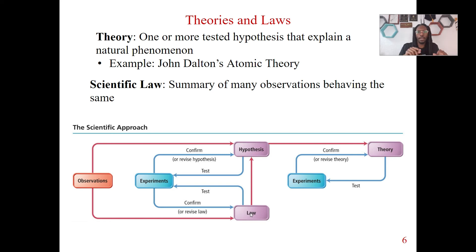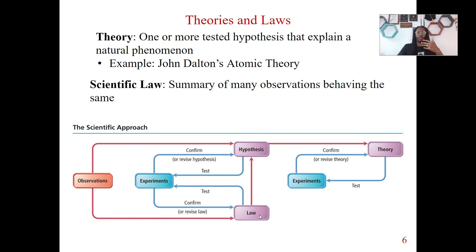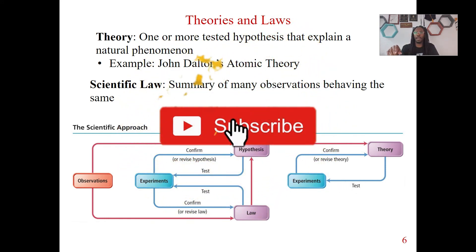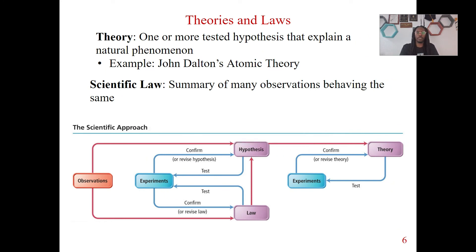Can a law turn into a theory? Yes, it can. Say I observe something — I observe it, I know it's a law, I've tested it, it's still happening. Well, now that I've done these experiments, let me come up with a hypothesis as to why this law is happening. For example, somebody saw gravity happen, they didn't know exactly why, but then they came up with a hypothesis for the law. That hypothesis then leads to a theory in the scientific approach, because we came up with the hypothesis from the law. So now we can test that hypothesis, ultimately leading to a theory. And now we're testing a theory that's about that law. This is how we approach everything with laws and theories.